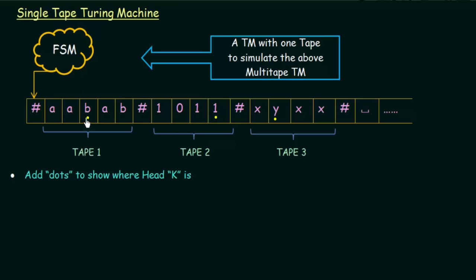The next step is to simulate a transition from state Q. We must scan our tape to see which symbols are under the K tape heads. In the multi-tape Turing machine, we checked if B, 1, and Y are under our tape heads. In our single-tape Turing machine, we do that by looking at the dots — scanning across the tape to see which symbols have dots under them.